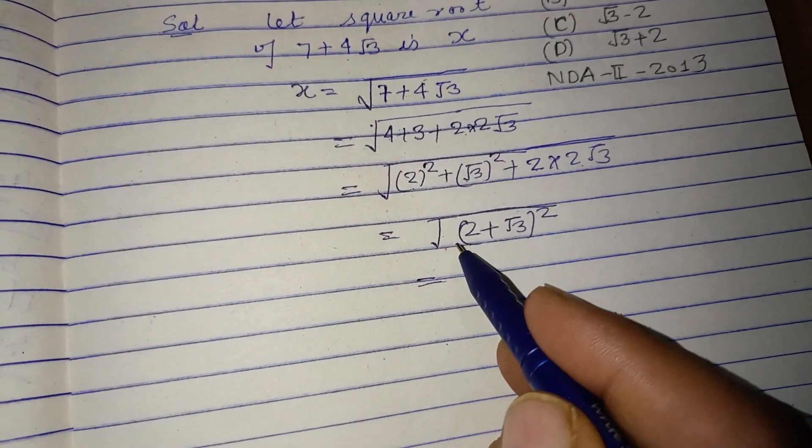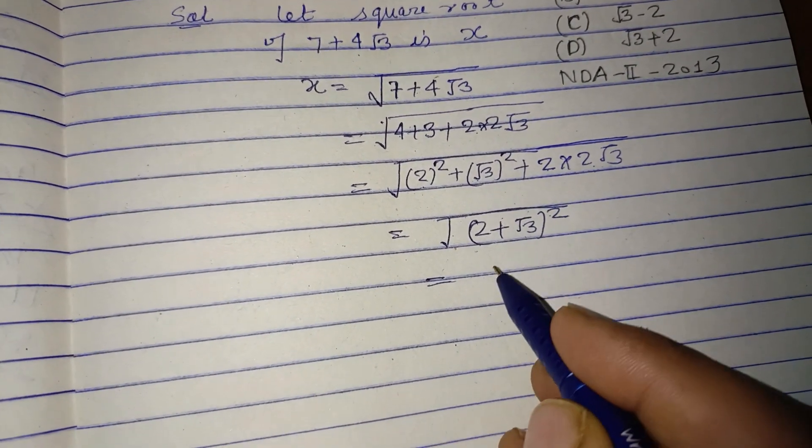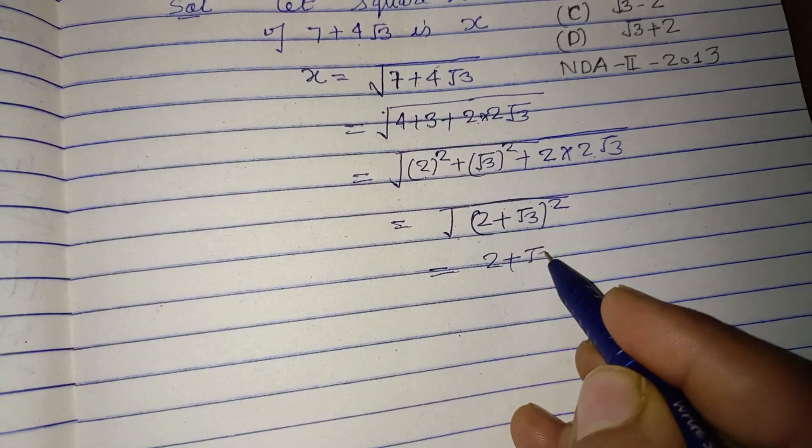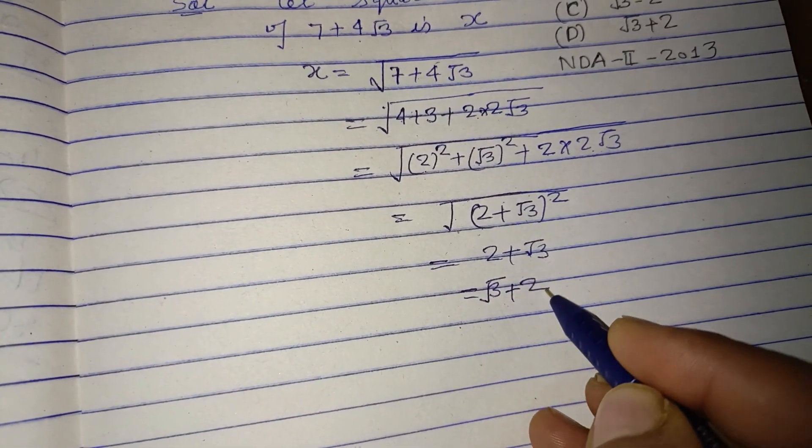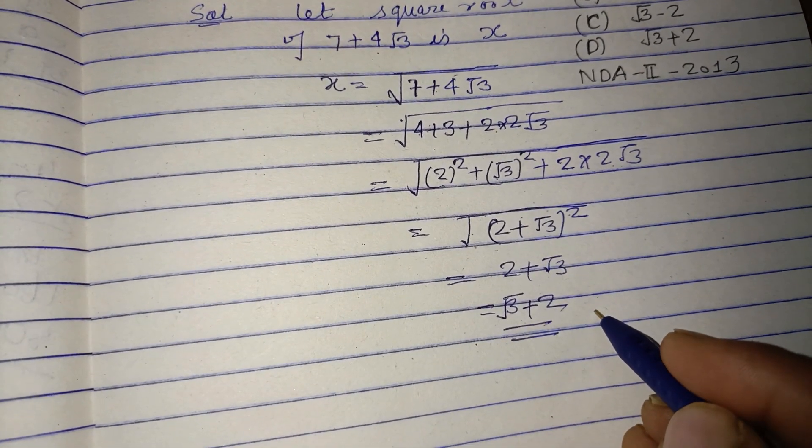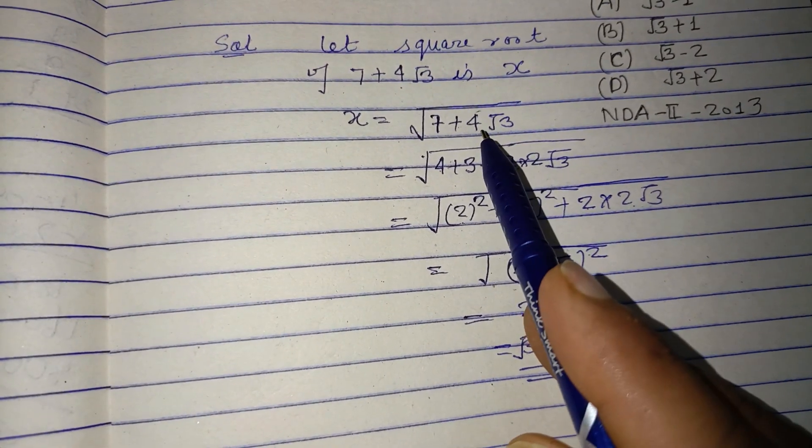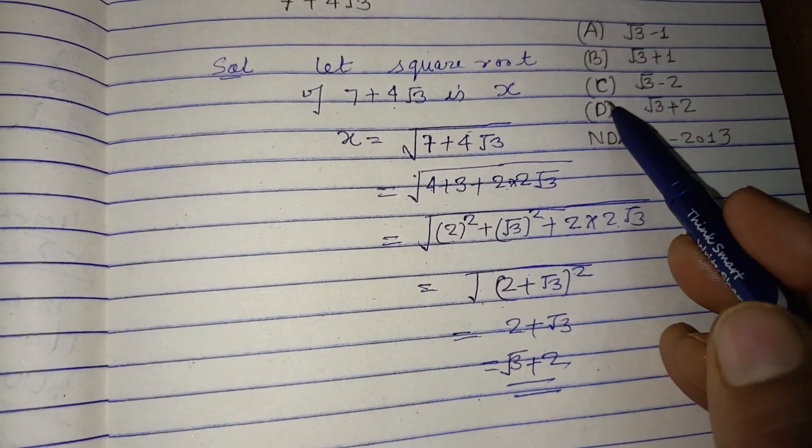Taking the square root, we get √((2 + √3)²) = 2 + √3. So the positive square root of 7 + 4√3 is 2 + √3, which is found in option D.